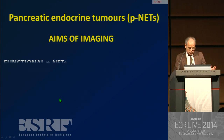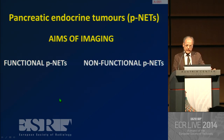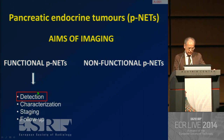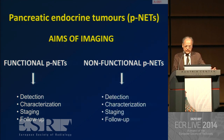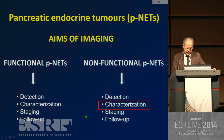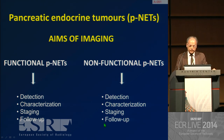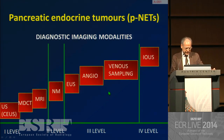There are two major differences concerning functional and non-functional PNETs. The major aim for functional PNETs is detection, because these tumors are small — inside one or two centimeters — so they are difficult to find. Concerning non-functional PNETs, these tumors tend to be large, so detection is not problematic. The problem is the differential diagnosis, so the characterization of this tumor, and the differential diagnosis with pancreatic adenocarcinoma. Of course, staging and follow-up are also important, mainly for non-functional PNETs.